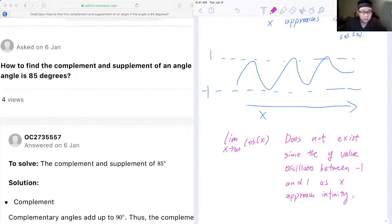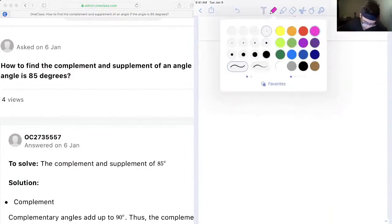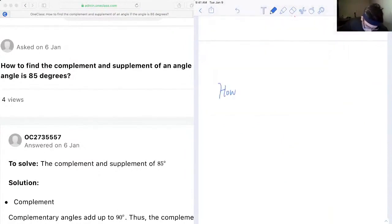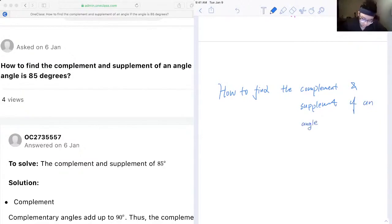Okay, so our next question is asking us how to find the complement and supplement of an angle is 85 degrees.